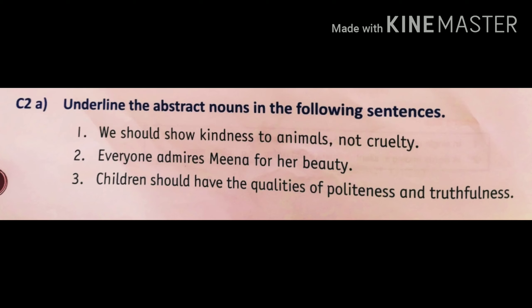Fourth one is: the Indian soldier fought the war with great courage. Fifth one is: the teacher said, write down the length and breadth and depth of this table. Sixth one is: Ram lived in a village in his boyhood. Students, in these sentences underline the word which is an abstract noun, do this exercise and send it to me.